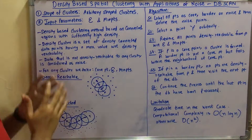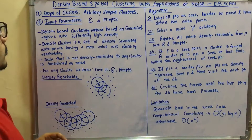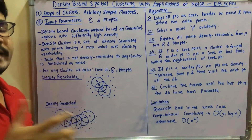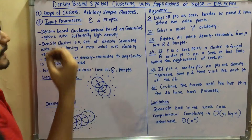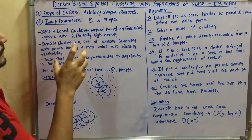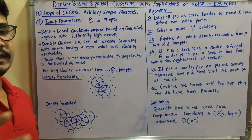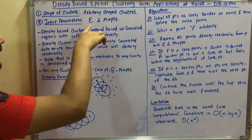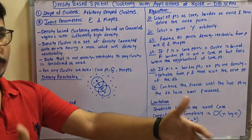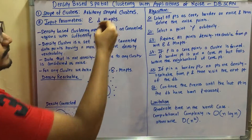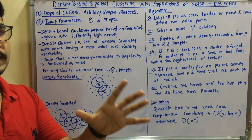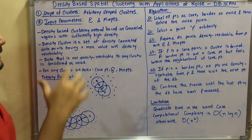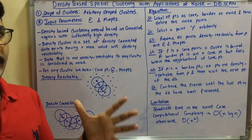The shape of clusters that DBSCAN can determine is arbitrary. The two key input parameters are epsilon and minimum points. Epsilon is the maximum density-reachable distance from the core point — covering core points, border points, and noise points. Minimum points refers to the minimum number of points considered within the clustering technique. The density-based clustering is built on connected regions with sufficiently high density.